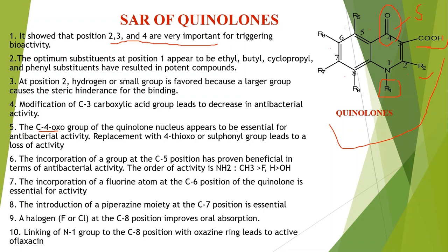The incorporation of a group at C5 position has proved beneficial in terms of antibacterial activity. Adding groups such as NH2, CH3, fluoro, H, or OH at C5 increases the activity. The incorporation of a fluorine atom at the C6 position is what defines fluoroquinolones — the C6 fluoro group is essential and significantly enhances antibacterial activity.